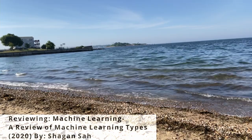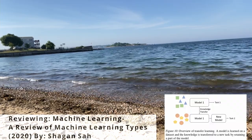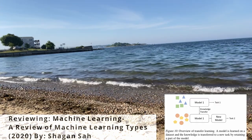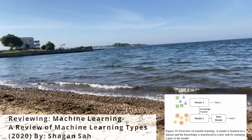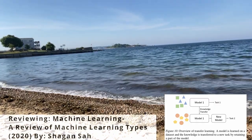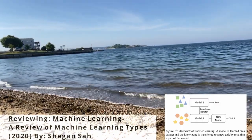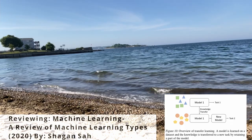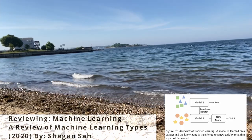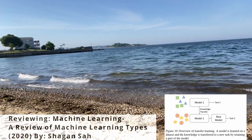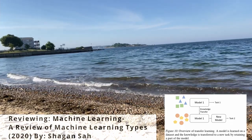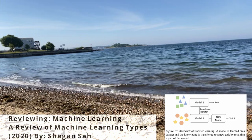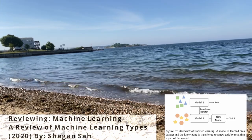Now we're back to transfer learning, so I'm not going to go over this too much because we've already described that to some extent. But one drawback that the article does mention is that you still have to label your data.